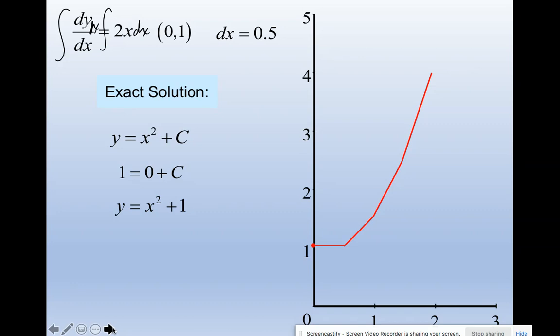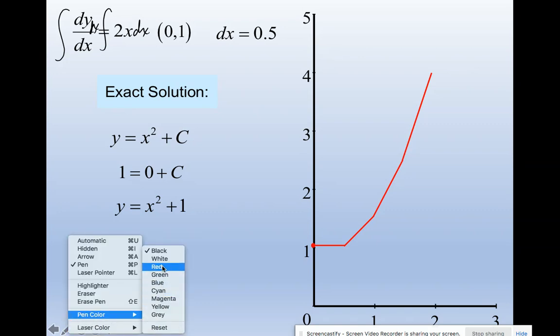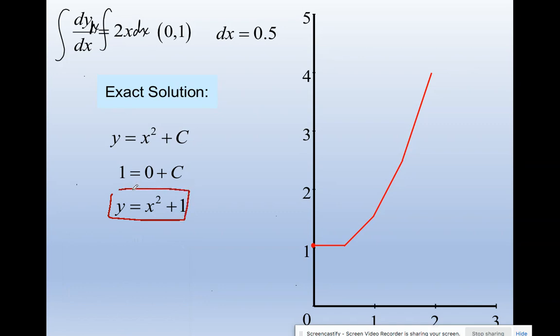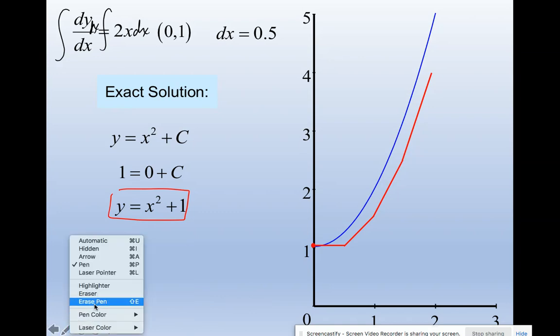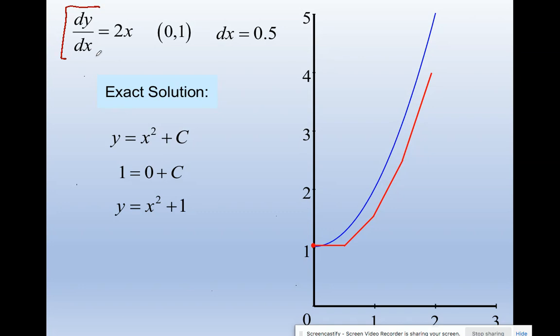And you get c is equal to one. Therefore the exact solution is y equals x squared plus one. Plot that. And that doesn't look too bad. Can you see the shape though? So imagine you didn't know how to solve the differential equation. I didn't need to integrate in order to get Euler's picture. All I needed was the derivatives. I used the derivative and the initial condition and tangent lines, equation of tangent lines. That's Euler's method.